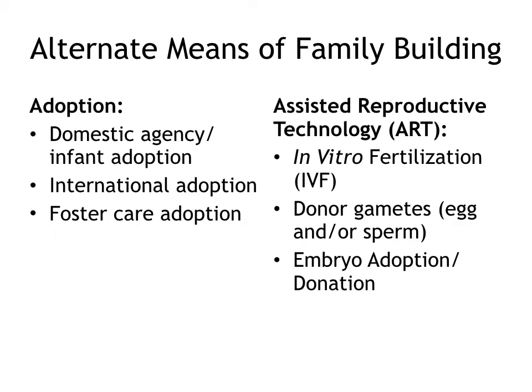Most individuals or couples who decide to start a family will do so the old-fashioned way — sexual intercourse resulting in pregnancy and the birth of a child. However, there are other ways of building families too. In this lecture, we will explore some of them. First, adoption: we'll look at domestic agency or infant adoption, international adoption, and foster care adoption.